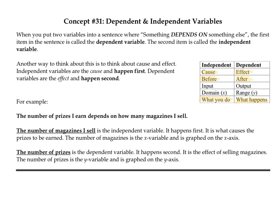Another way of looking at the magazine problem: you've got magazines to sell — you have to do that first. And because you've done that first, you're going to earn prizes. So what happens first is you sell magazines, and what happens second is you earn prizes. The number of prizes is our dependent variable because it depends on the number of magazines sold.